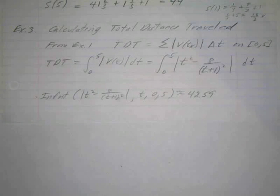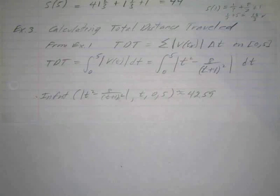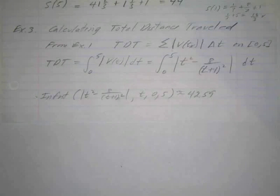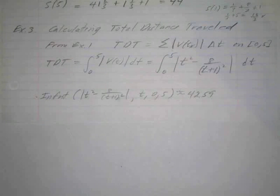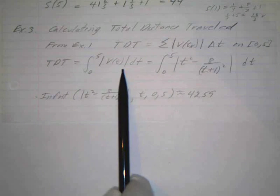These are some more notes from section 7.1. This is example three, from exercise example number one — we did number two, but it's the same. Calculating the total distance traveled, so the TDD was the summation of the little increments of velocity over the time, and that's on zero to five from that example one and two. So the total distance traveled is just the integral from zero to five of this velocity.